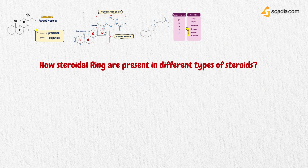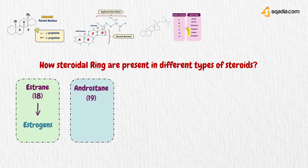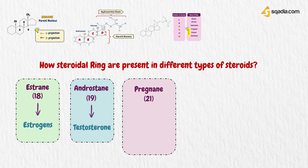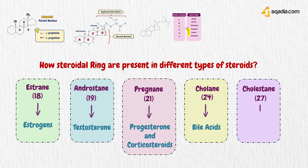Different steroidal ring systems are present in different types of steroids. For example, the estrane nucleus is present in the estrogens, whereas androstane is present in the androgens like testosterone. Similarly, pregnane is present in progesterone and corticosteroids — which are of two types: glucocorticoids and mineralocorticoids. Likewise, cholane is present in bile acids, whereas cholestane is present in cholesterol. In this way, different types of steroidal nuclei are present in different steroidal compounds.